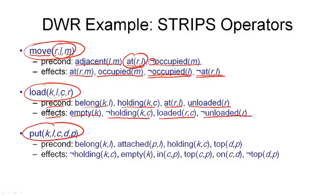There is also the put action, with parameters: a crane, a location, container C, another container D, and a pile into which we're putting C. Preconditions: the crane must be at the location, the pile must be at the location, and the crane must hold container C. Container D is the container on top of the pile before execution — we need to know this so we can remove it from state. After the action: D is no longer on top of the pile, C is placed on top of D and becomes the new top, the crane is empty, and it no longer holds C. There are also unload and take actions that reverse the load and put actions.